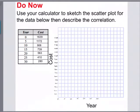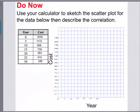If you haven't seen that video, back up and go watch it, then come back here and do this Do Now. So go ahead and pause the video now and give it a shot. What we need to do is use our calculator to sketch the scatter plot with the data below, then describe the correlation. I'll go ahead and do that on the graph, and in the next couple of videos we'll look at how to do this on our calculators.